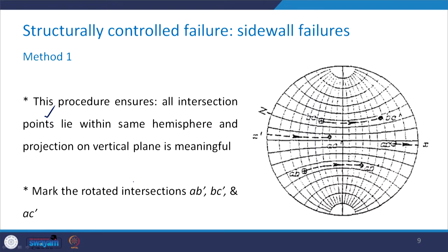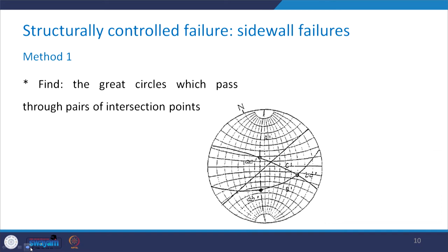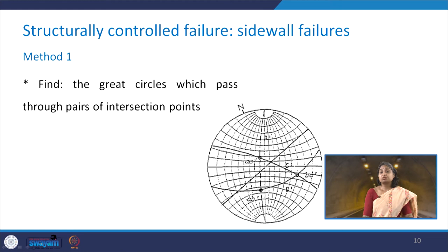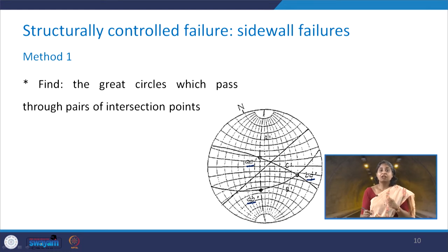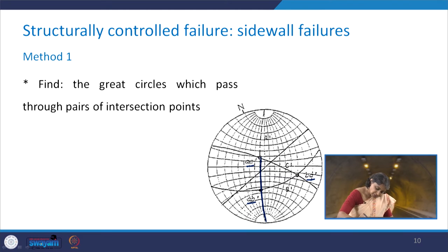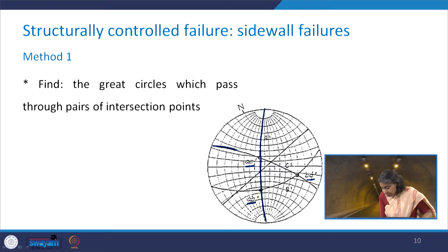We now mark the rotated positions of B,C prime / A,C prime / and A,B prime. Next, we find the great circles that pass through the pairs of intersection points. By rotating the tracing sheet on the stereo net, we identify the great circle passing through A,B prime and A,C prime, and similarly find the second and third great circles.